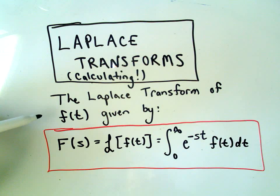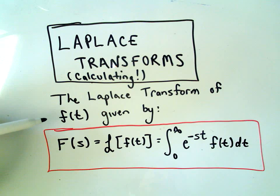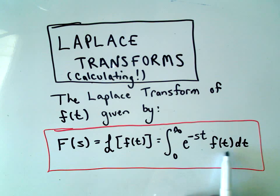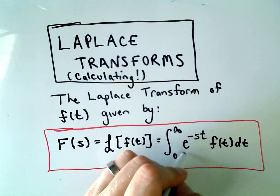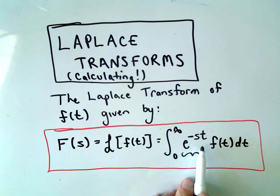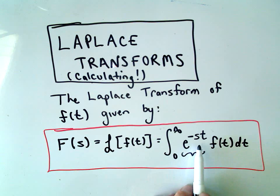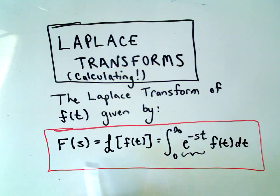The definition of a Laplace transform of some function f(t) — where t is defined from 0 to infinity — says that if we take the Laplace transform of f(t), we multiply that function by e to the negative st, and then integrate with respect to t over the limits 0 to infinity. Notice we have this new variable s, and at the end, when we integrate, it'll be a function in terms of s — hence the F(s) notation on the left-hand side.